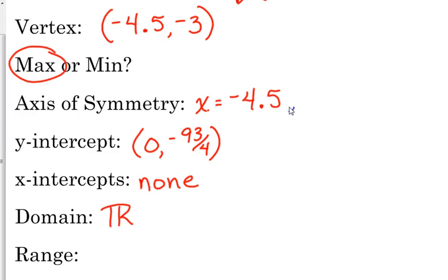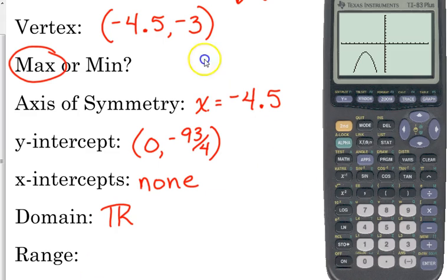Now, the range, that's talking about the y-values. So now we use the y-value of our vertex, but we've got to decide, is it less than, or is it greater than this? Do we have y-values less than negative 3, or do we have y-values greater than negative 3? Less than. So we write that y is less than, or equal to negative 3.